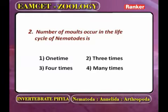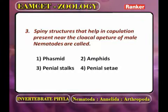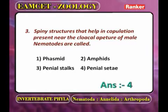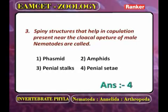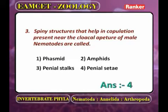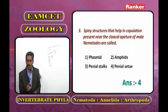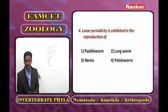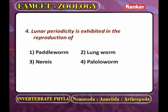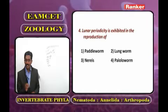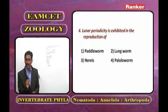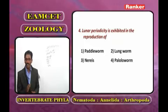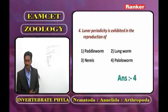Third: spiny structures that help in copulation, present near the cloacal aperture of male nematodes, are copulatory spicules. In some only one spicule is present; in some two equal, and in some two unequal spicules. These are called penial setae. Fourth: lunar periodicity is exhibited in the reproduction of Eunice — the polychaete commonly known as the Palolo worm.